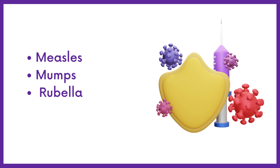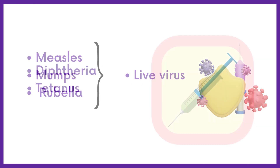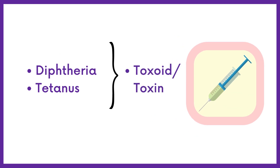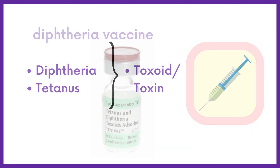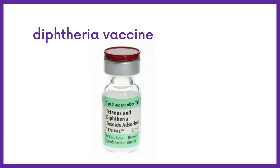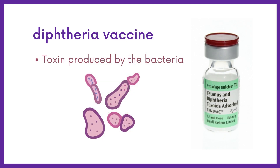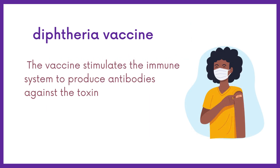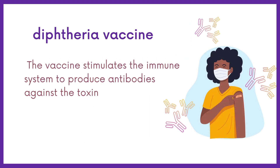Measles, mumps, and rubella are prepared from live virus, while diphtheria and tetanus are prepared from toxoids or toxins. The diphtheria vaccine contains a harmless form of the toxin produced by the bacteria Corynebacterium diphtheriae, which causes diphtheria. The vaccine stimulates the immune system to produce antibodies against the toxin, providing protection against the disease.